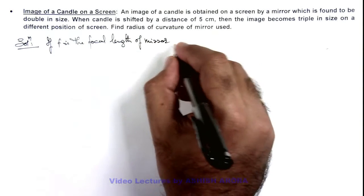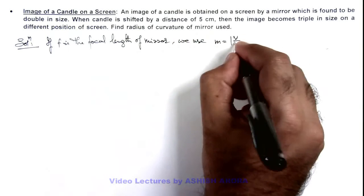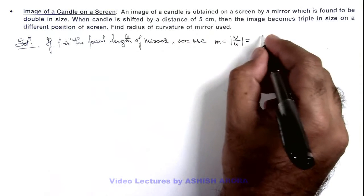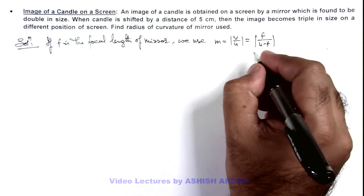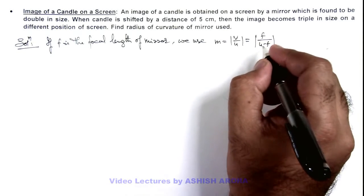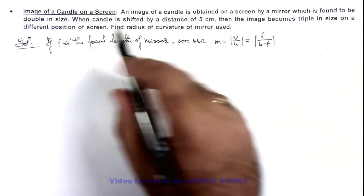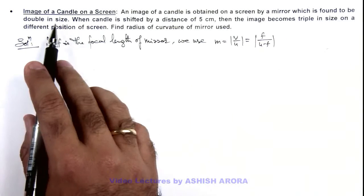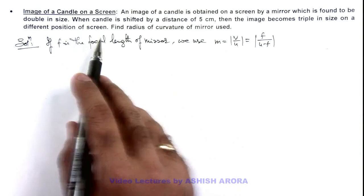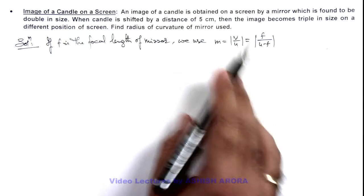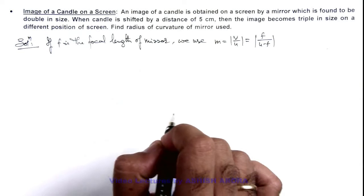Then we use the magnification as magnitude of v by u, which can be written as f by u minus f, if u is the distance of object from mirror and f is the focal length. As we are given that image size is enlarged, earlier it was double then it becomes triple, that means the value of u will be less than f, so the value of magnification would be negative if we remove this modulus sign.